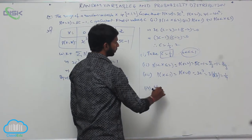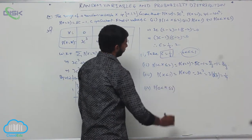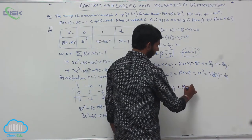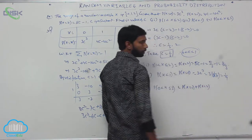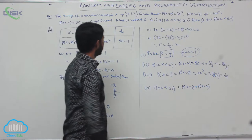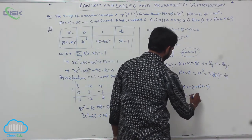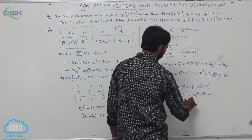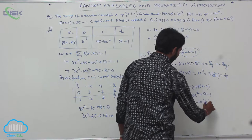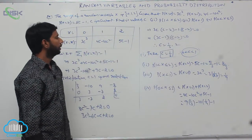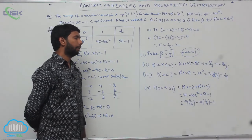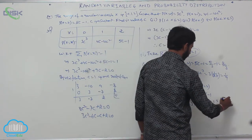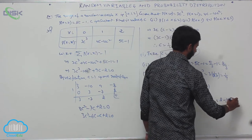Finally, P(0 < X ≤ 3): between 0 and 3, only X = 1 and X = 2 qualify. So P(0 < X ≤ 3) = P(X=1) + P(X=2) = (4C − 10C²) + (5C − 1). Substituting C = 1/3: (4/3 − 10/9) + (5/3 − 1) = (12/9 − 10/9) + (2/3) = 2/9 + 6/9 = 8/9.